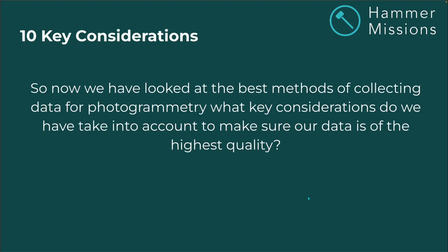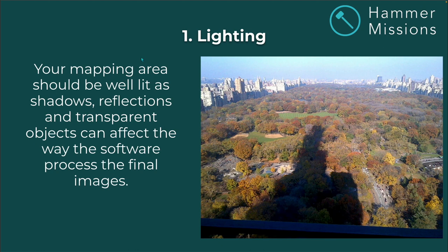Now we've looked at the best methods of collecting data for photogrammetry, here are the key considerations to make sure your data is of the highest quality. Lighting: your mapping area should be well lit, as shadows, reflections, and transparent objects can affect how the software processes the final image. As you can see in this picture of Central Park, a huge shadow over the area would cause all of that data to be lost within the shadow.